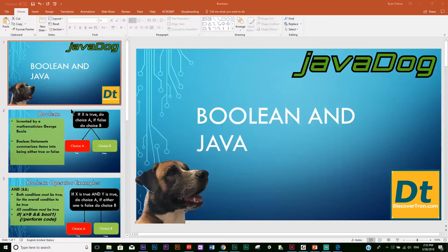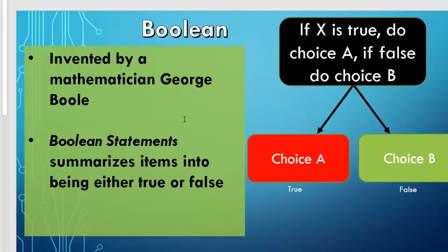Let's roll into the lesson and check out my sweet graphics. Boolean is actually named after a guy named George Boole. He was a mathematician who invented these things called Boolean.